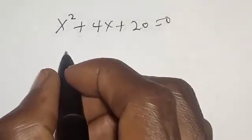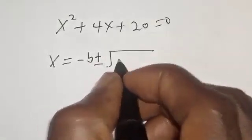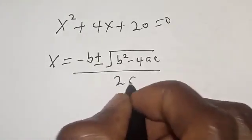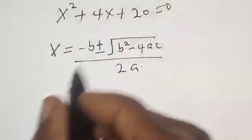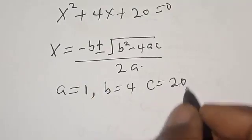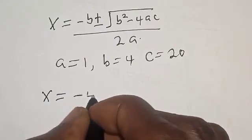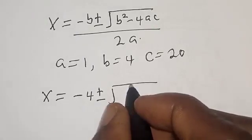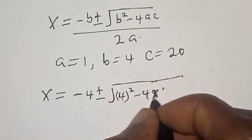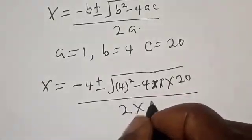The quadratic formula is x equals minus b plus or minus square root of b squared minus 4ac, over 2a. From the equation x squared plus 4x plus 20 equals 0, we have a equal to 1, b equal to 4, and c equal to 20. So x equals minus 4 plus or minus square root of 4 squared minus 4 times 1 times 20, over 2 times 1.